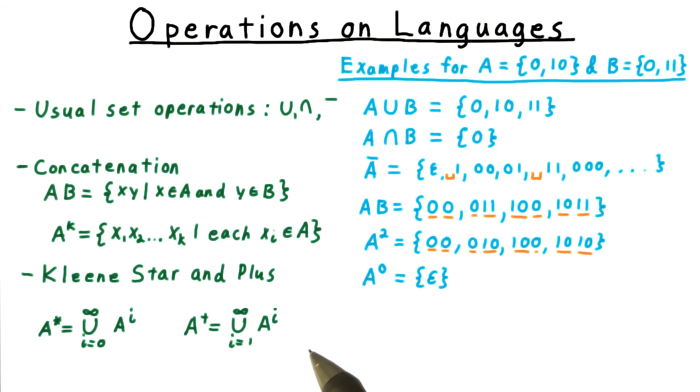When we want to concatenate any number of strings from a language together to form a new language, we use an operator known as Kleene star. This can be thought of as the union of all possible powers of the language. When we want to exclude the empty string, we use the plus operator instead, which insists that at least one string from A be used. Notice the difference in the starting indices.